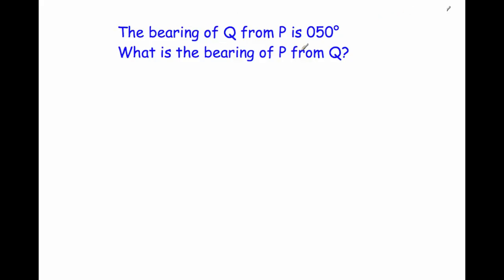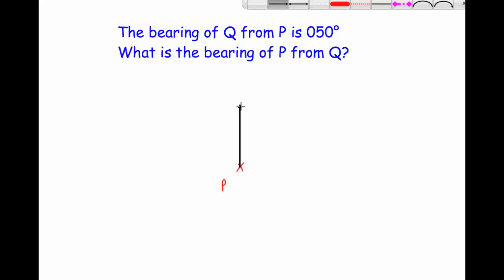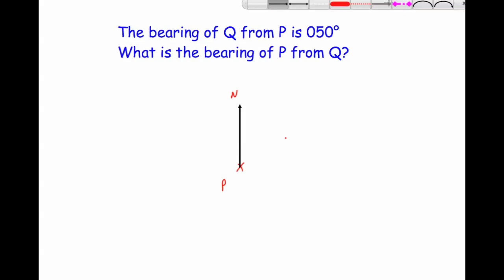Our next question says: the bearing of Q from P is 50 degrees. What is the bearing of P from Q? There is a shortcut, which I'll show at the very end, but I'd rather show the method first so you understand why the answer is what it is. It says 'from P', so let's draw P with its north line. 50 degrees means we go 50 degrees clockwise from north, so Q is up here somewhere. Let's draw that line — Q is over here on a bearing of 50 degrees from P.